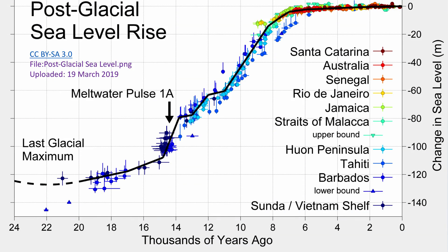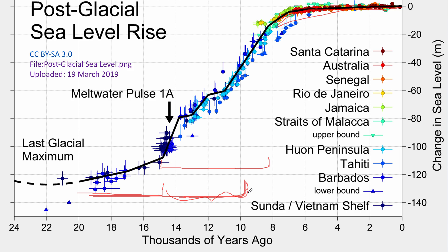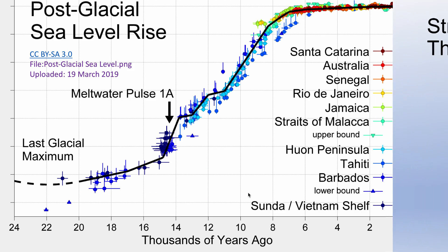This map shows the post-glacial sea level rise. We see that most of the sea level rise took place within a reasonably short amount of time. During the Holocene period, within the last 8,000 years, we had very little sea level rise, and between 20,000 to around 15,000 years ago we also had very little. The rise was concentrated into a relatively brief period of time. This is the map that proves that Sundaland really was submerged.